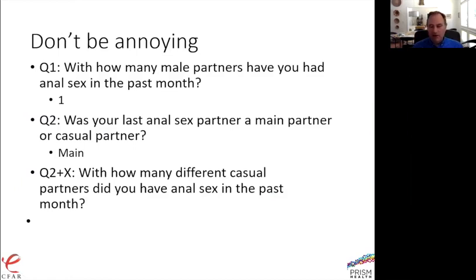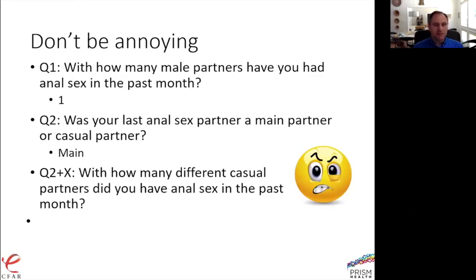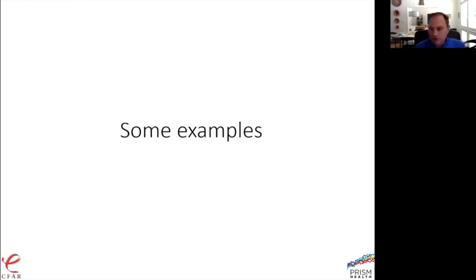Don't be annoying with questions. Here's a series: 'How many male partners have you had anal sex with in the last month?' — the answer is one. 'Was that last anal sex partner a main partner or a casual partner?' — a main partner. Then later in the questionnaire: 'With how many different casual partners did you have sex in the last month?' The respondent's reaction: you've already asked how many sex partners I had, I told you one, and I told you it was a main partner. Use technology to skip questions you should already know the answer to. Respondents who encounter this kind of logical failure often just stop.